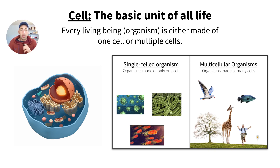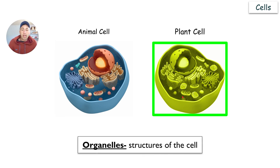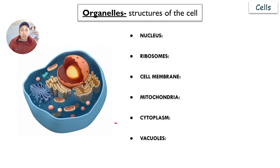The cell is the basic unit of all life. There are two main types of cells: the animal cell and the plant cell. Animal cells are what animals are made of — we're made up of animal cells. Plant cells make up vegetation like trees and grass. They have very similar things in common but some things that are different. The structures inside of the cell are referred to as organelles.